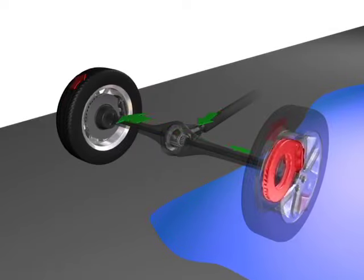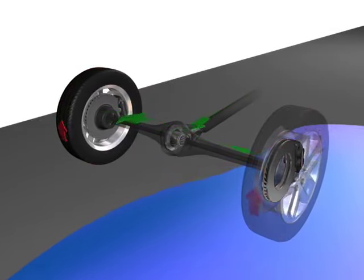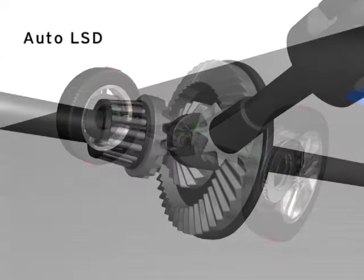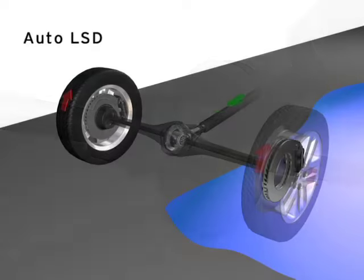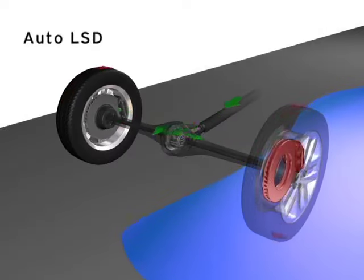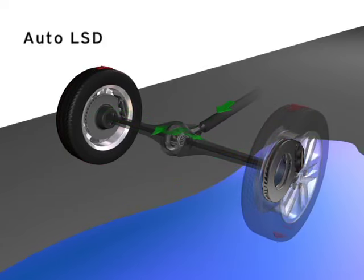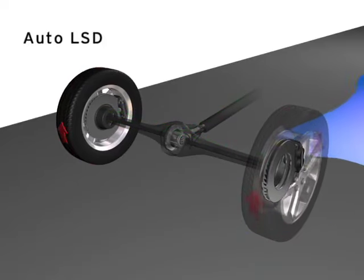An alternative to differential-based LSDs and locking differentials are brake-activated LSDs such as Toyota's Auto LSD system. Brake-activated LSDs use an open differential but selectively apply the brakes to the wheel with the least traction. This takes advantage of the path of least resistance to transfer power to the wheel that isn't having the brake applied.